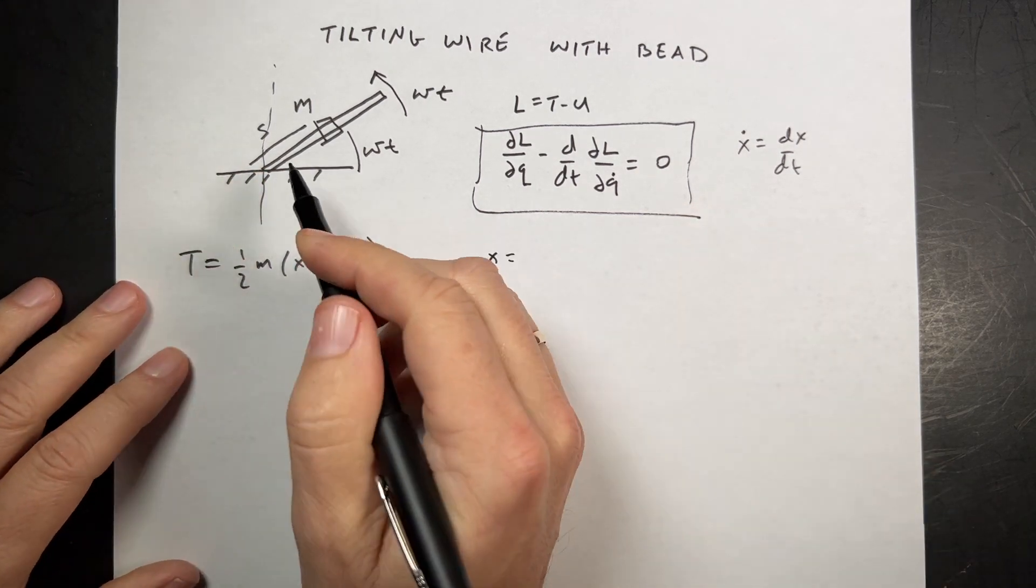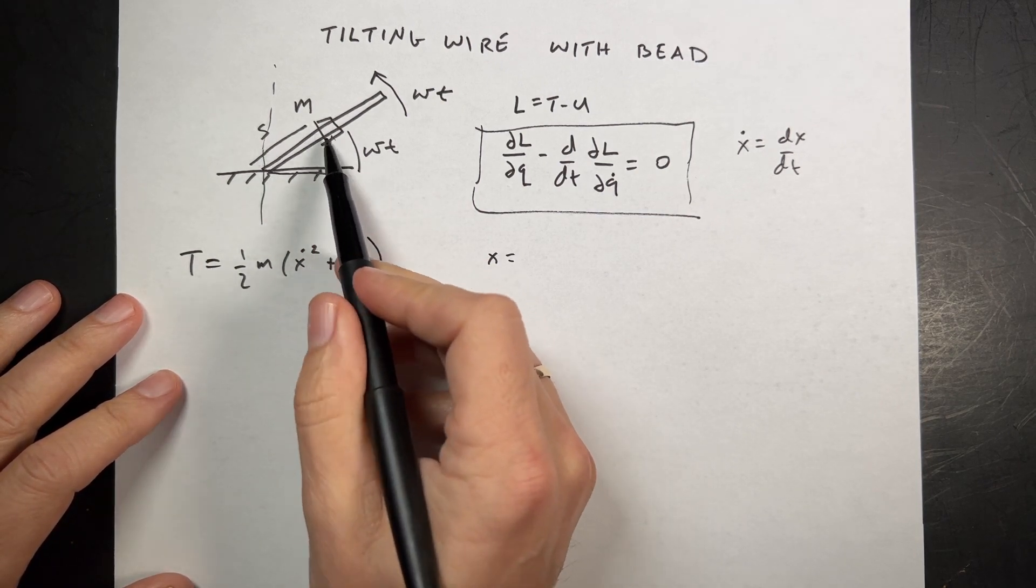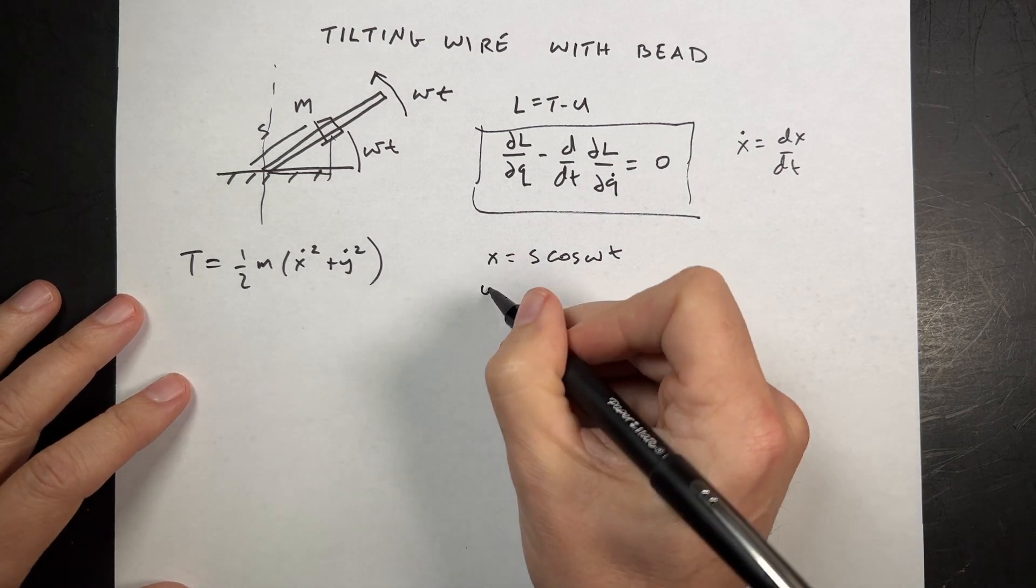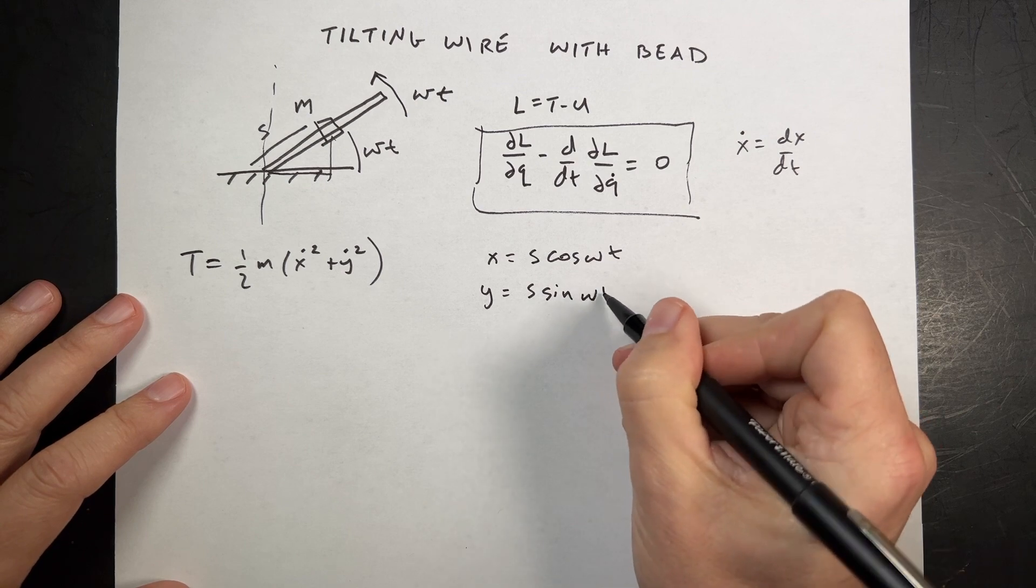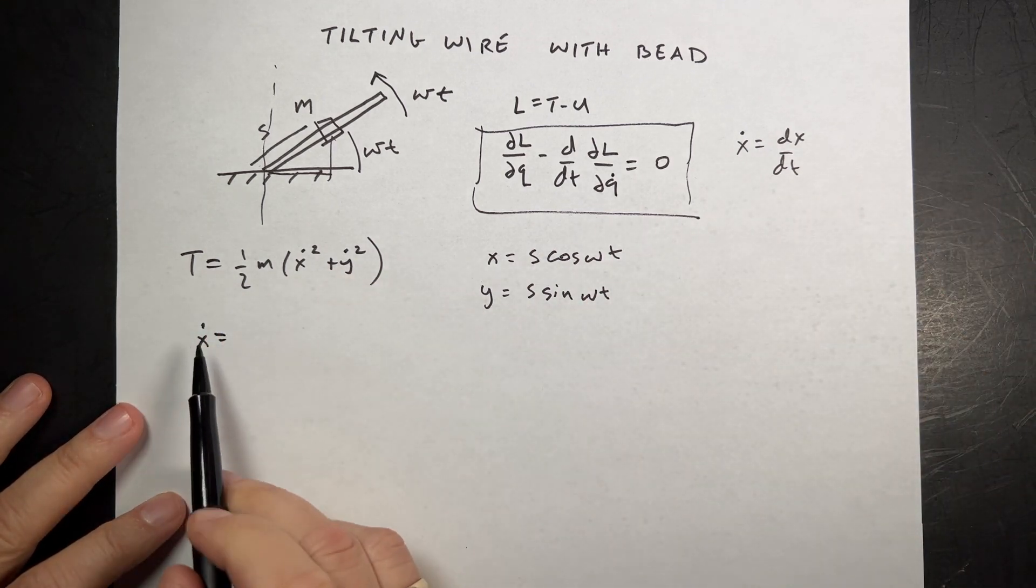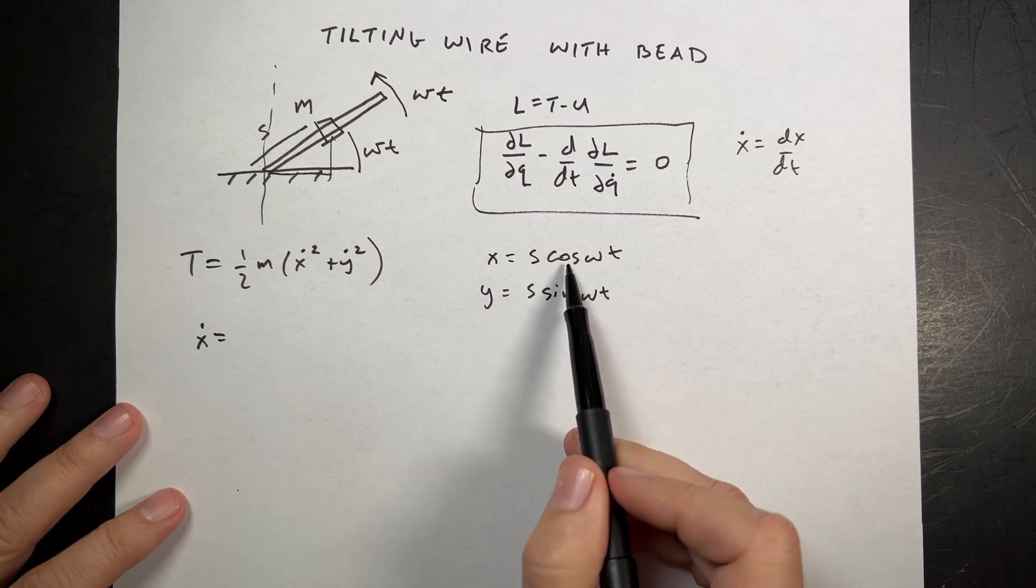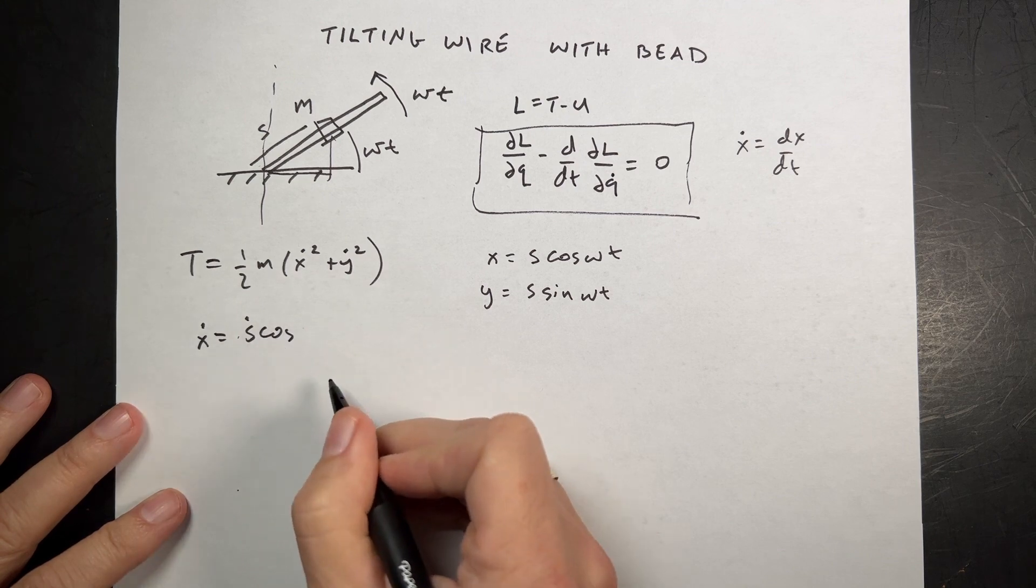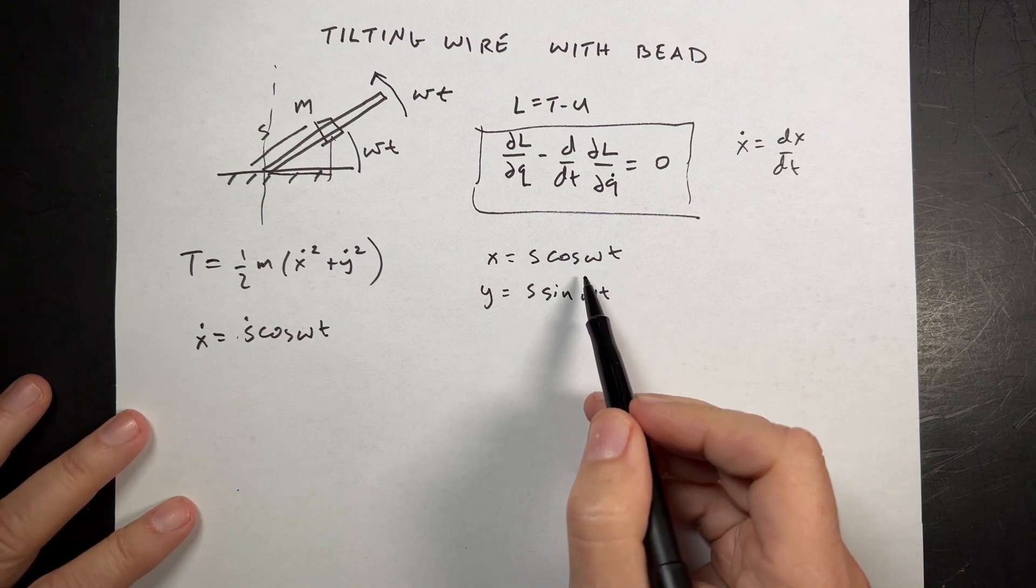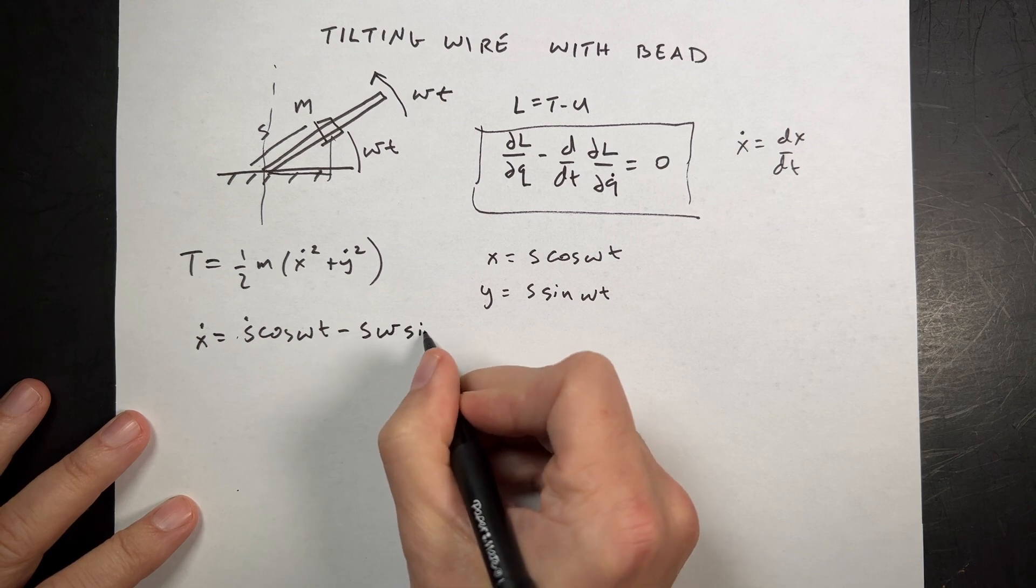So all I need to do is to get the x and y coordinates of this in terms of S and omega. Because this angle right here is omega t. Then I can get the kinetic energy. So let's do that. This isn't too hard. x is going to be equal to this distance right here, which is the position S times the cosine of this angle. So that's going to be equal to S cosine omega t. And then y is going to be S sine omega t.